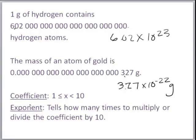There are two important parts to a number in scientific notation. First, the coefficient — the number out in front. The coefficient must be greater than or equal to 1 and less than 10, meaning the decimal point always goes behind the first number that's not a zero: 6.02, 3.27 — always one number in front of the decimal. The exponent tells how many times to multiply or divide the coefficient by 10: a positive exponent means multiplying, and a negative exponent means dividing.